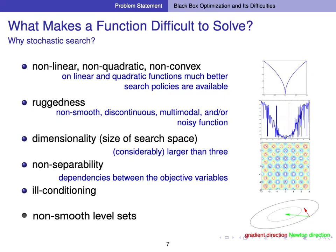In other words, if we know that the objective function has such a property, the CMA-ES is probably not the best first choice, and much better search policies exploiting these properties are available. For the other difficulties, we will explain in the following slides.